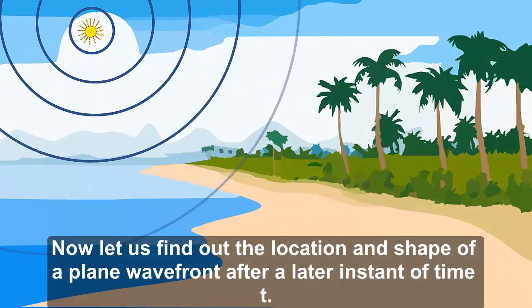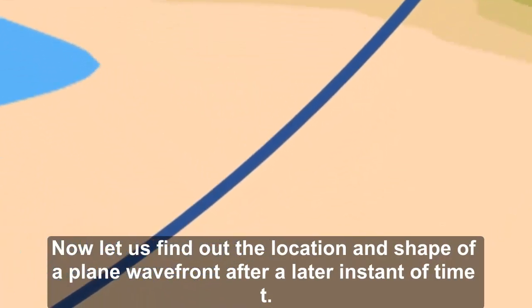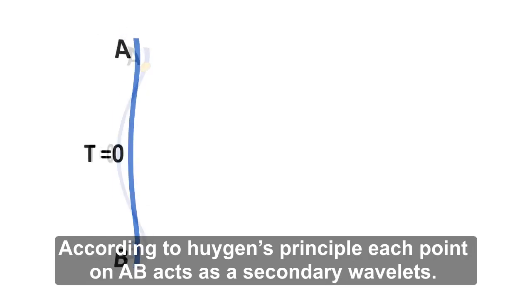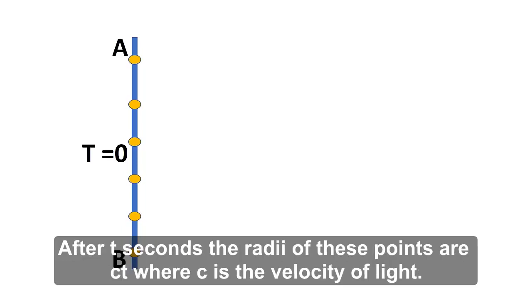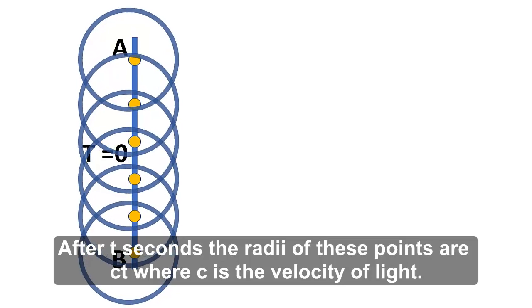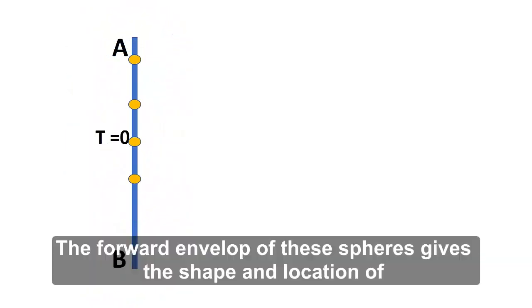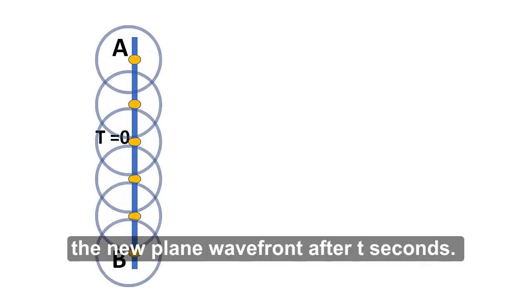Now, let us find out the location and shape of a plane wavefront after a later instant of time t. Let AB be the plane wavefront at time t equals zero. According to Huygens' principle, each point on AB acts as a secondary wavelet. After t seconds, the radii of these points are ct, where c is the velocity of light. The forward envelope of these spheres gives the shape and location of the new plane wavefront after t seconds.